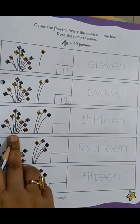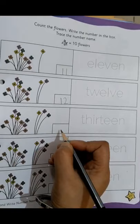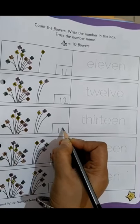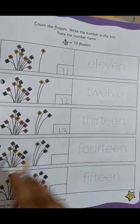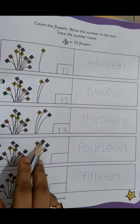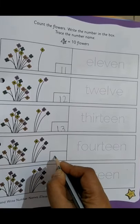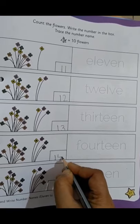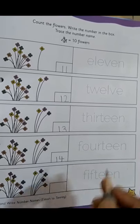Then again, 10 flowers and 3 flowers. So you will write 13 out here. Then 10 flowers and 1, 2, 3, 4. 4 flowers. So you will write, what will you write? Yes, 14 out here.